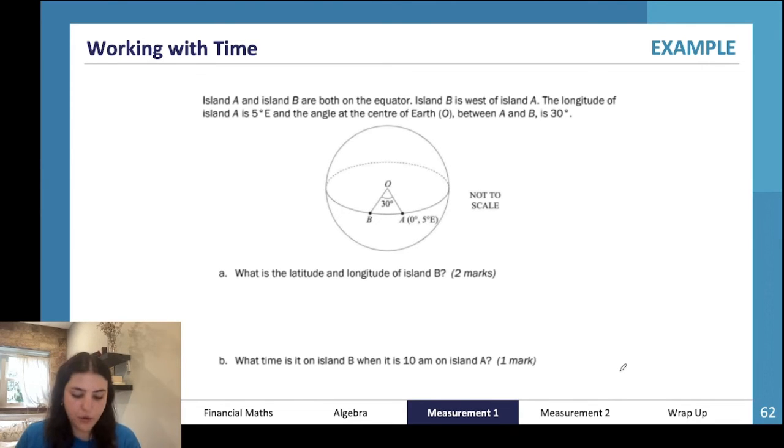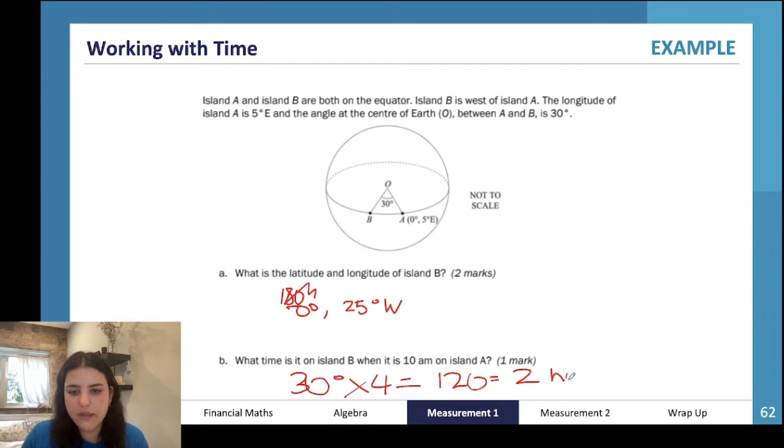Question A: What is the latitude and longitude of Island B? We know it's on the equator and it's 5° East, but then we have a 30 degree difference. If we're moving west, we're adding 30 degrees, so it would be 25° West. But it's also on the equator, so it's going to be 0 degrees. What time is it on Island B when it is 10 a.m. on Island A? There's a 30 degree difference. One degree is 4 minutes, so that's 120 minutes, which is 2 hours. Two hours behind Island A is going to be 8 a.m.